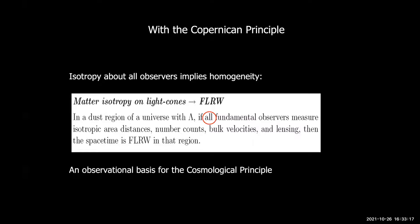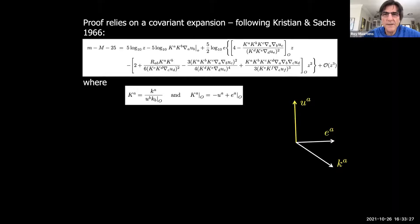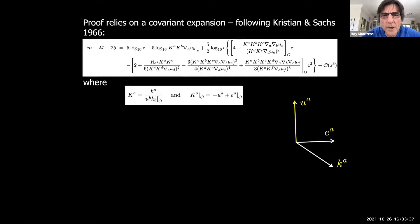Yes, those equations for the Hubble parameter and deceleration parameter are in a completely general spacetime — perhaps I didn't make that clear enough. It's quite remarkable: this is the paper of 1966 by Kristian and Sachs, where they were making these redshift expansions in a totally general dust spacetime, and adding Lambda still works.